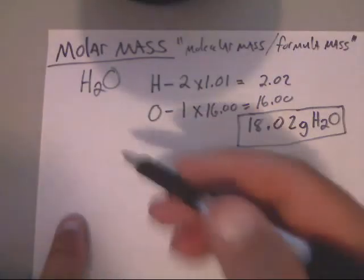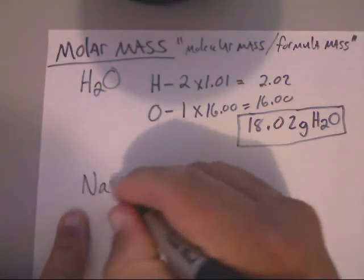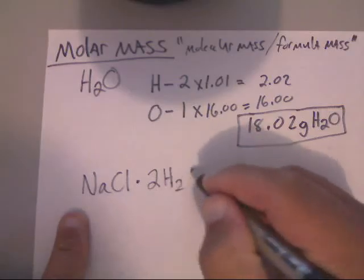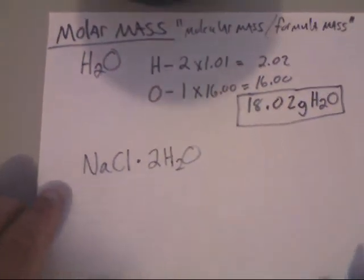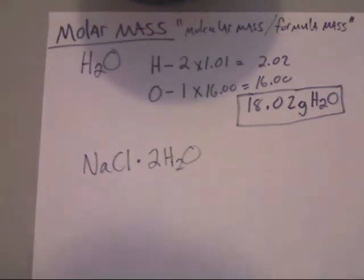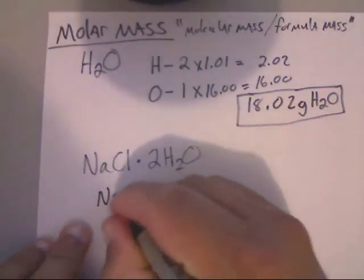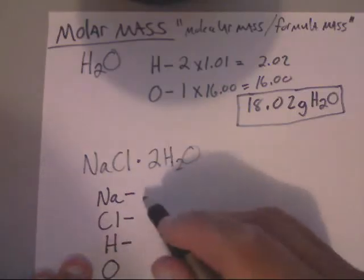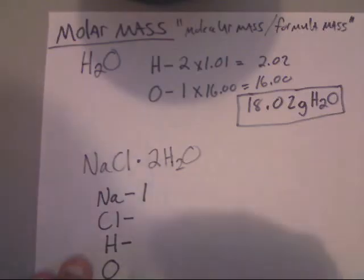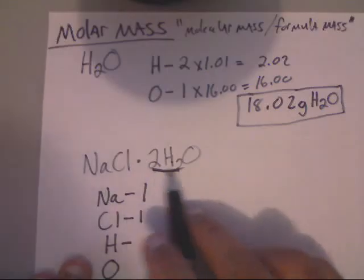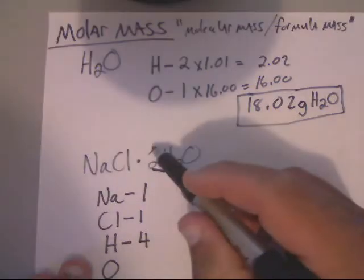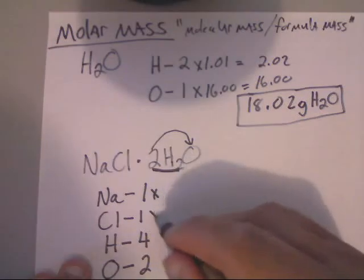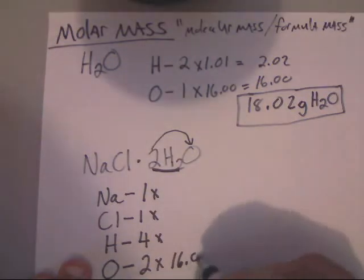Now let's do one that's a little bit harder — NaCl·2H₂O. All that you do here is you still make your same grocery list of each atom that you have. We've got Na, we've got Cl, we've got hydrogen, and we've got oxygen. On the sodiums, we've got one. Chlorine, we've got one. Hydrogens — you actually have four here because two times two is four. And oxygens, you've got two because it's two times the one there.